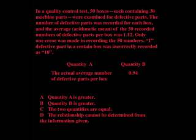One defective part in a certain box was incorrectly recorded as 10. Which is larger, quantity A, the actual average number of defective parts per box, or quantity B, 0.94?